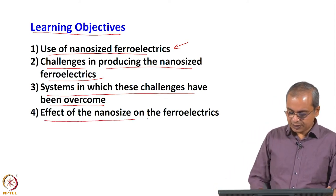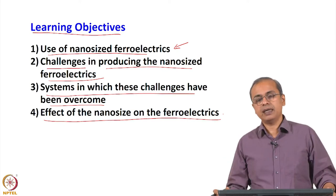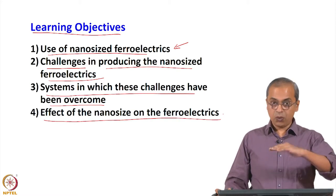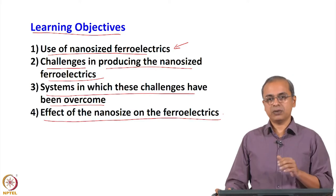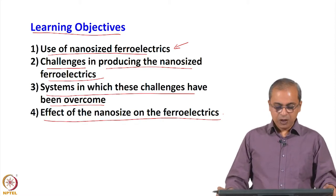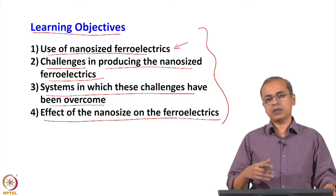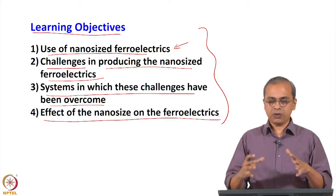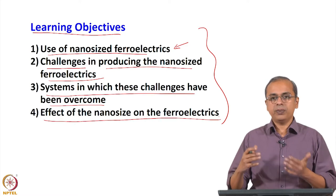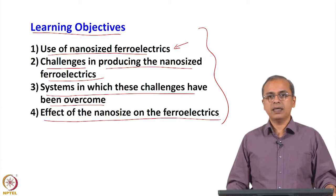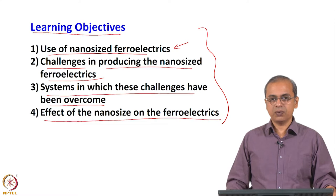Finally, the effect of nanosize on ferroelectrics is an important piece of information used to overcome the limitations of ferroelectrics at the nanoscale. These are our learning objectives. As always, we will talk of the general concept involved, the thought process involved, the phenomena involved, and towards the end of the class I will give you a couple of references which look at these details in more specifics, and you can go look them up if you have more interest.